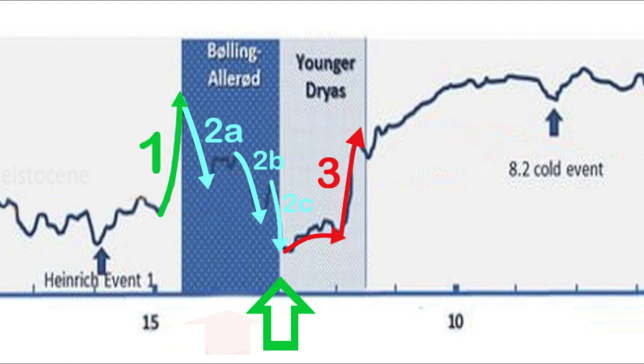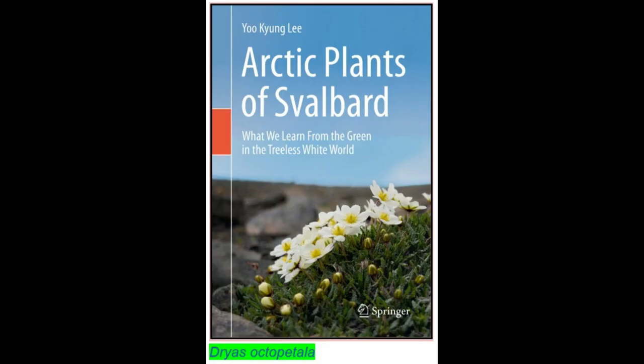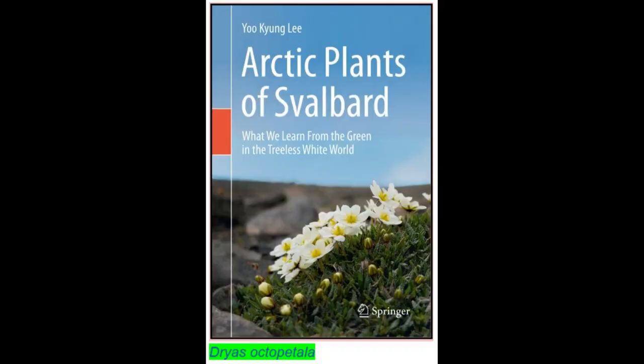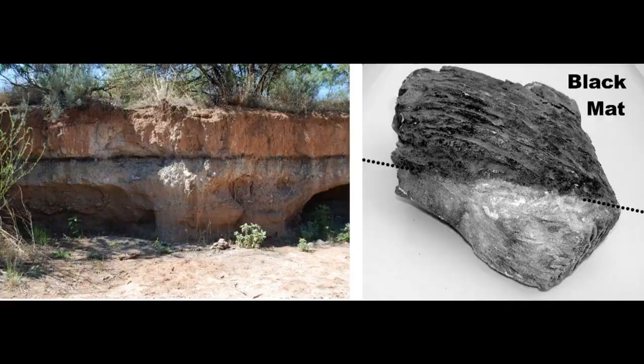The Younger Dryas is named after an indicator genus, the Alpine Tundra Wildflower Dryas octopetala, as its leaves are occasionally abundant in late glacial, often mineralogenic-rich sediments, such as the lake sediments of Scandinavia. So the Younger Dryas plant is not characteristic for the Younger Dryas itself, but rather an indicator of mineralogenic-rich sediments, and possibly even of mining by humans.